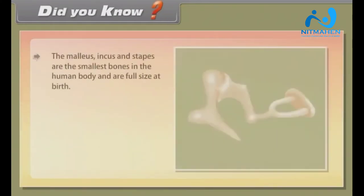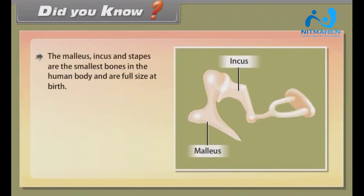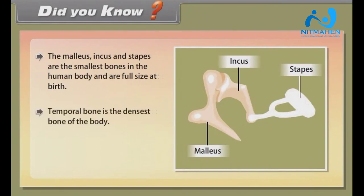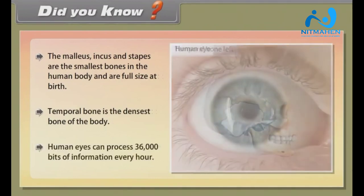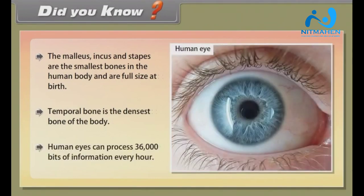Did you know? The malleus, incus, and stapes are the smallest bones in the human body and are full size at birth. The temporal bone is the densest bone of the body. Human eyes can process 36,000 bits of information every hour.